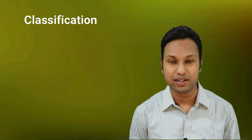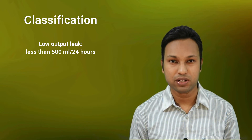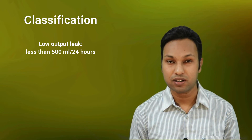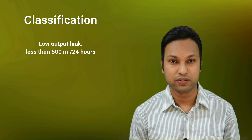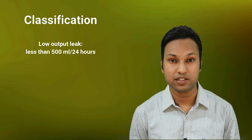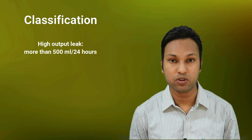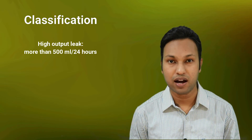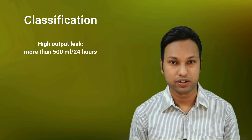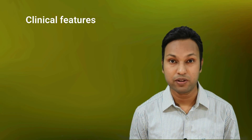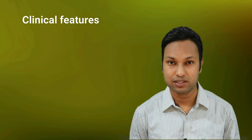Chyle leak can be classified as low output type and high output type. When the chyle leak is less than 500 ml in 24 hours, it is termed low output leak. When the leak is more than 500 ml in 24 hours, it is termed high output leak.